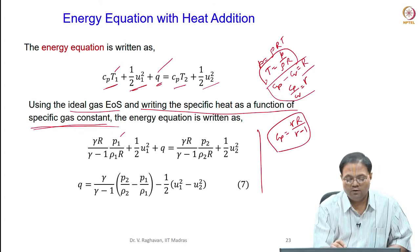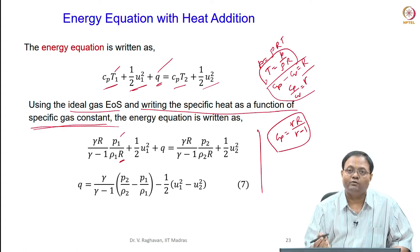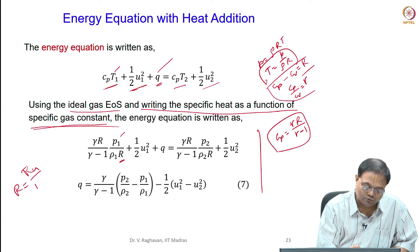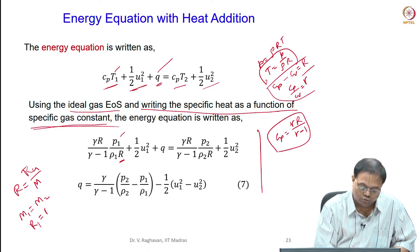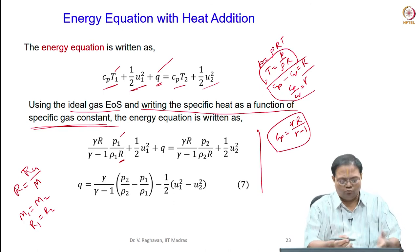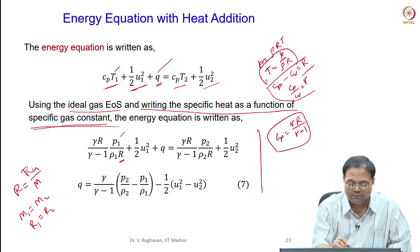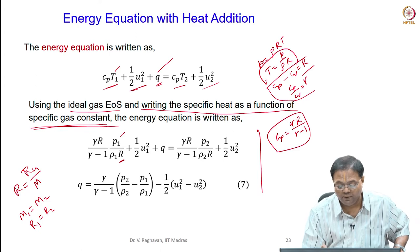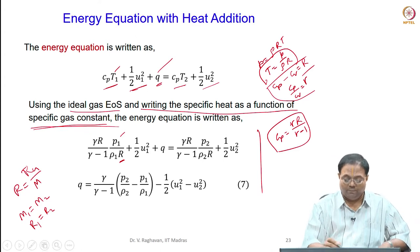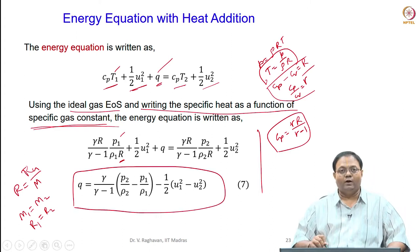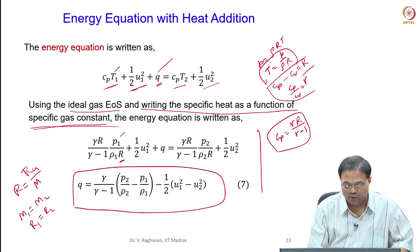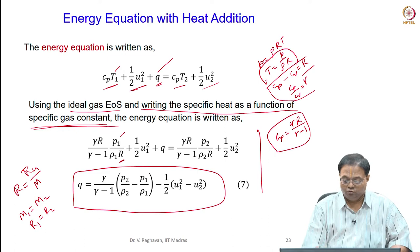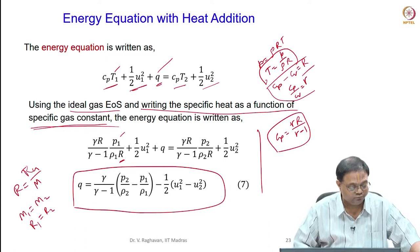Since R₁ = R₂ (molecular weights are approximately the same), R is the same on both sides. We write: [γR/(γ−1)]·(P₁/ρ₁R) + ½u₁² + Q = [γR/(γ−1)]·(P₂/ρ₂R) + ½u₂². Combining terms: Q equals γ/(γ−1) times (P₂/ρ₂ minus P₁/ρ₁) minus ½(u₁² minus u₂²).